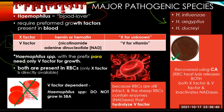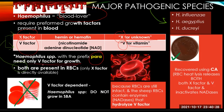Haemophilus organisms require growth factors present in blood — the X factor and the V factor. The X factor is hemin or haematin, where X stands for 'unknown.' The V factor is nicotinamide adenine dinucleotide, NAD, where V stands for 'vitamin.' Haemophilus species with the prefix 'para' require only the V factor for growth — if you see the prefix 'para,' these species need only the V factor for growth. Do not forget this.